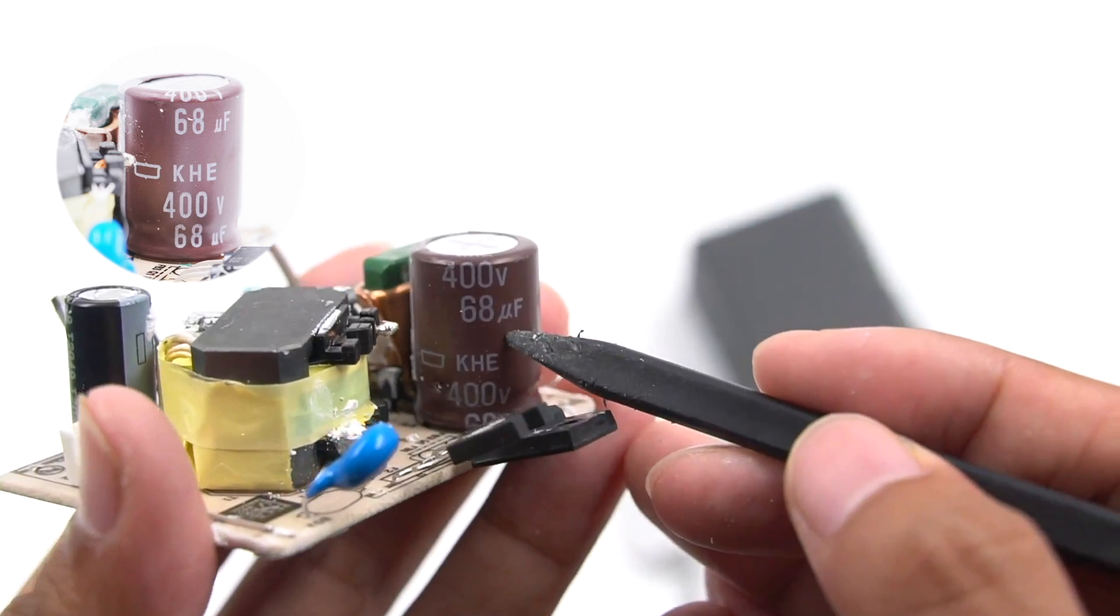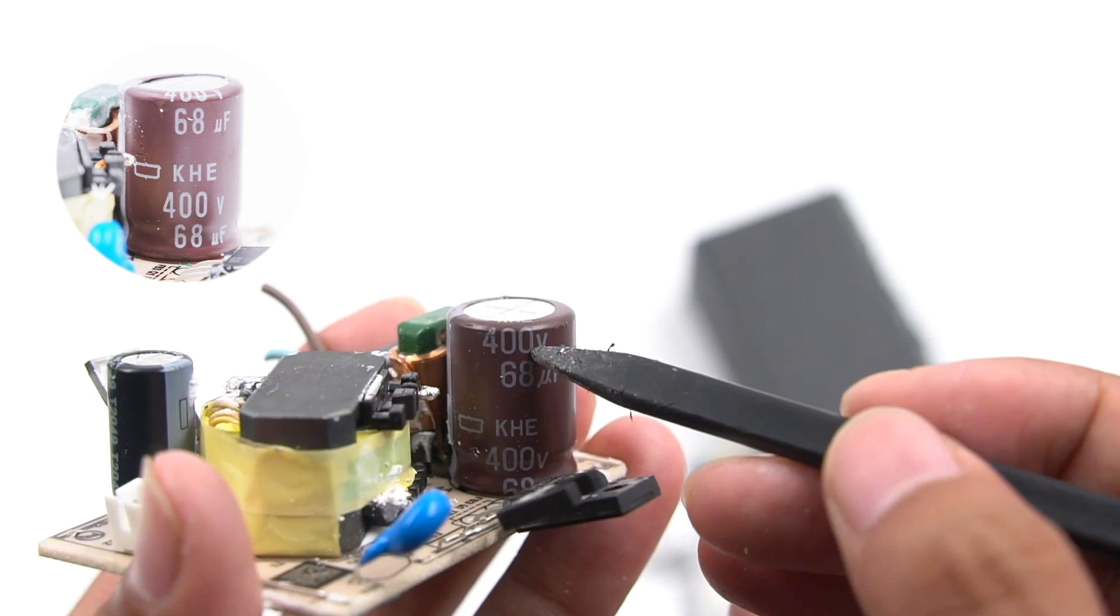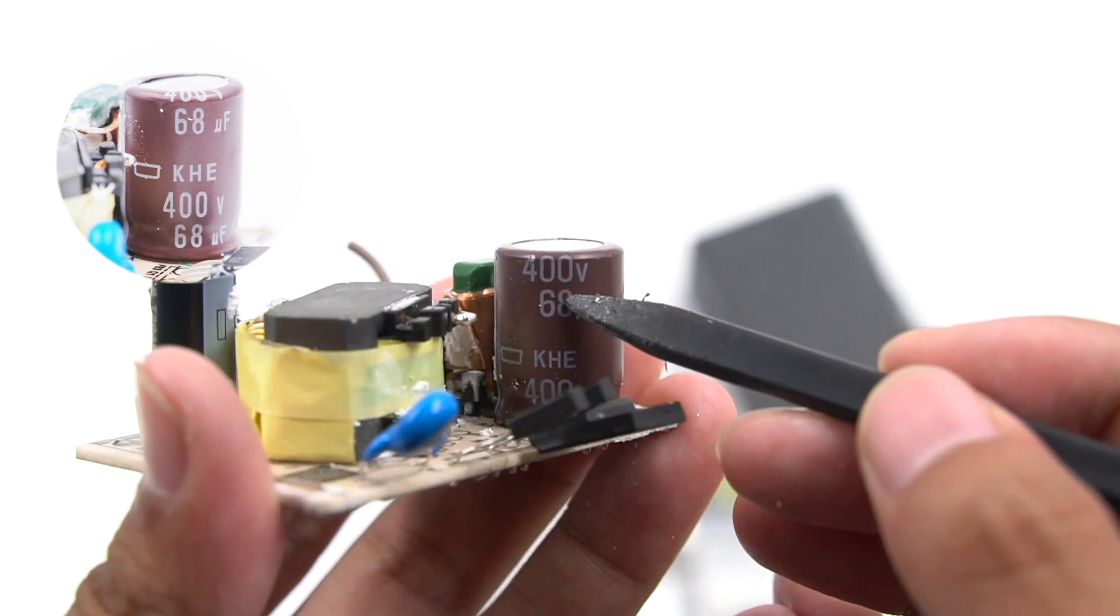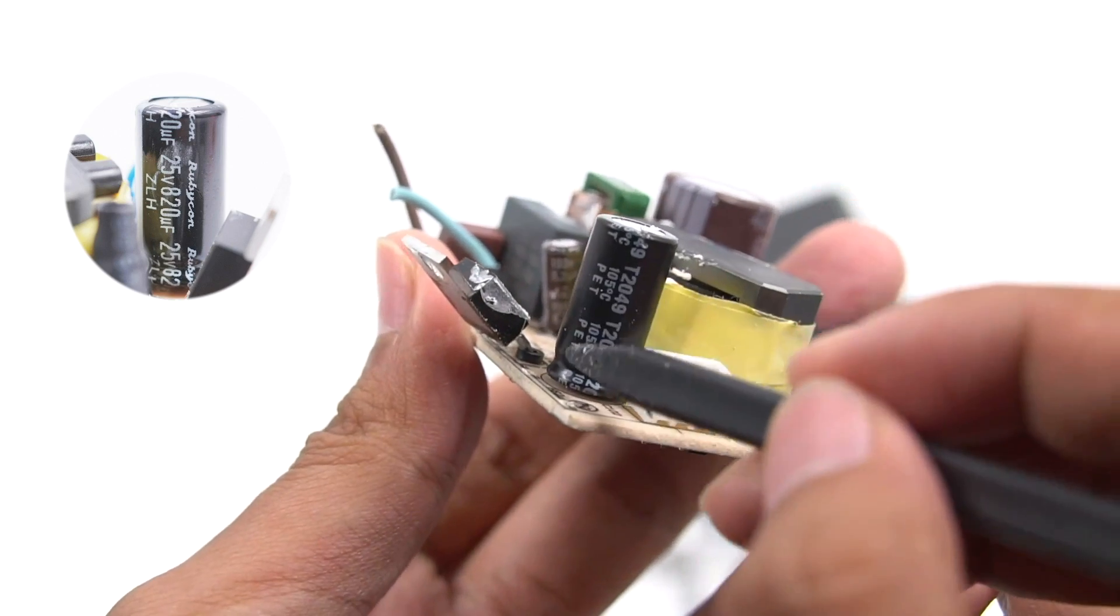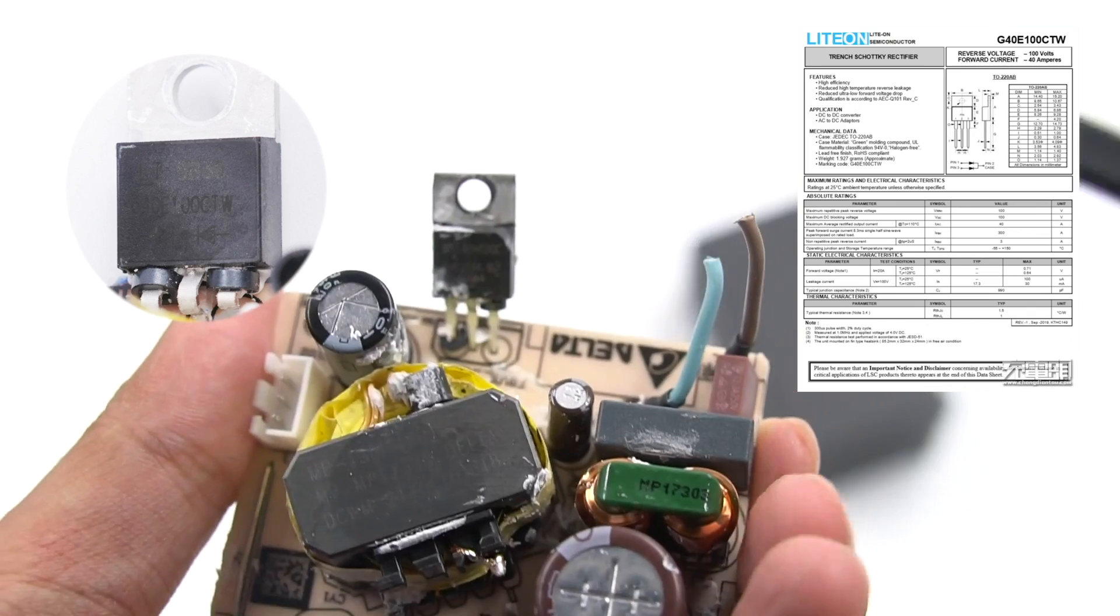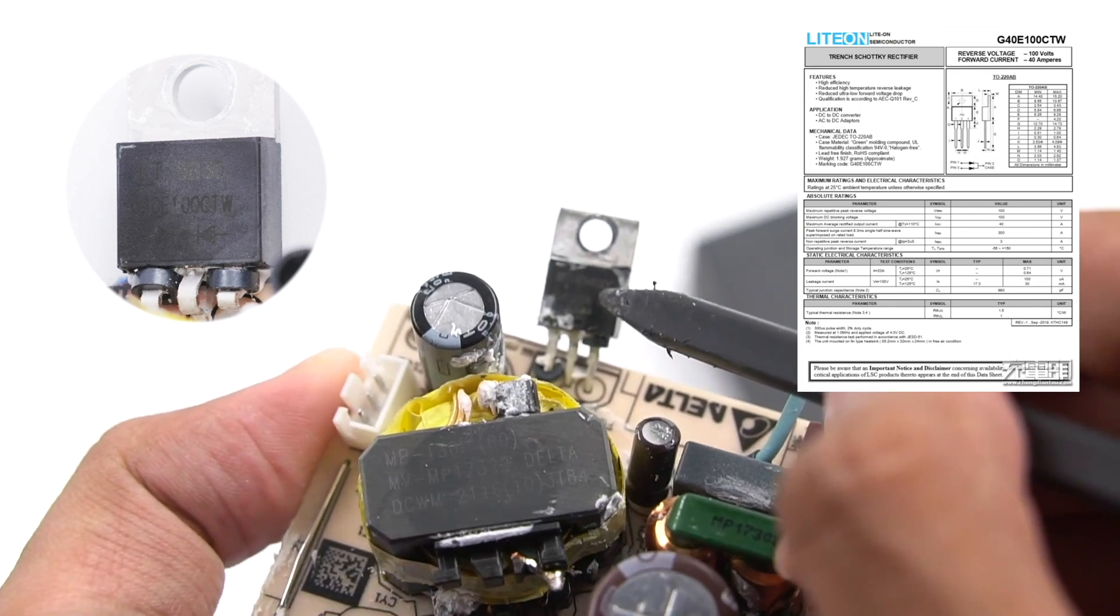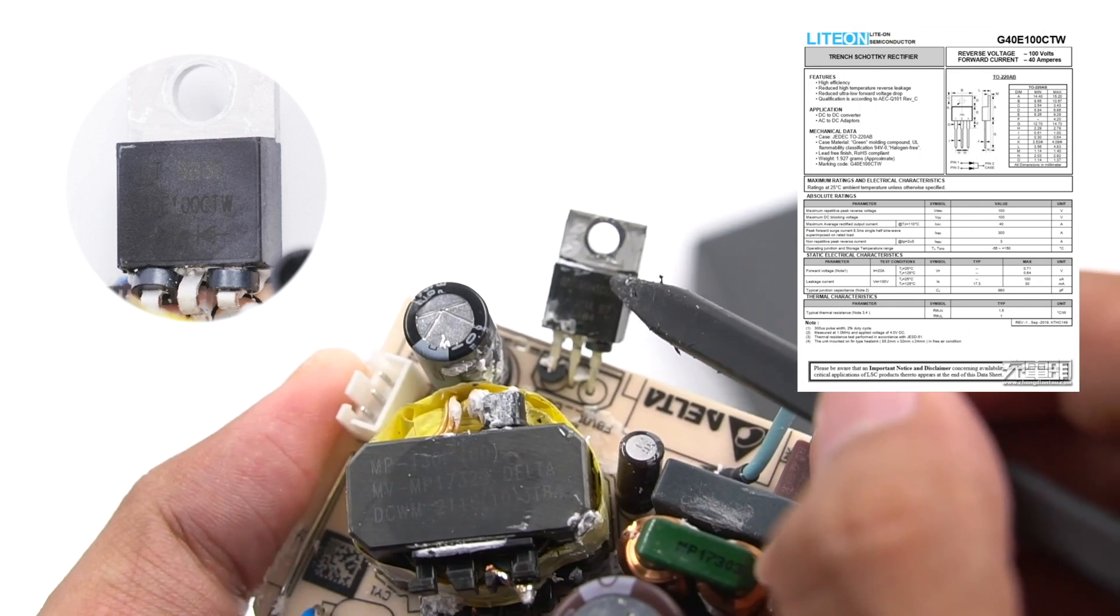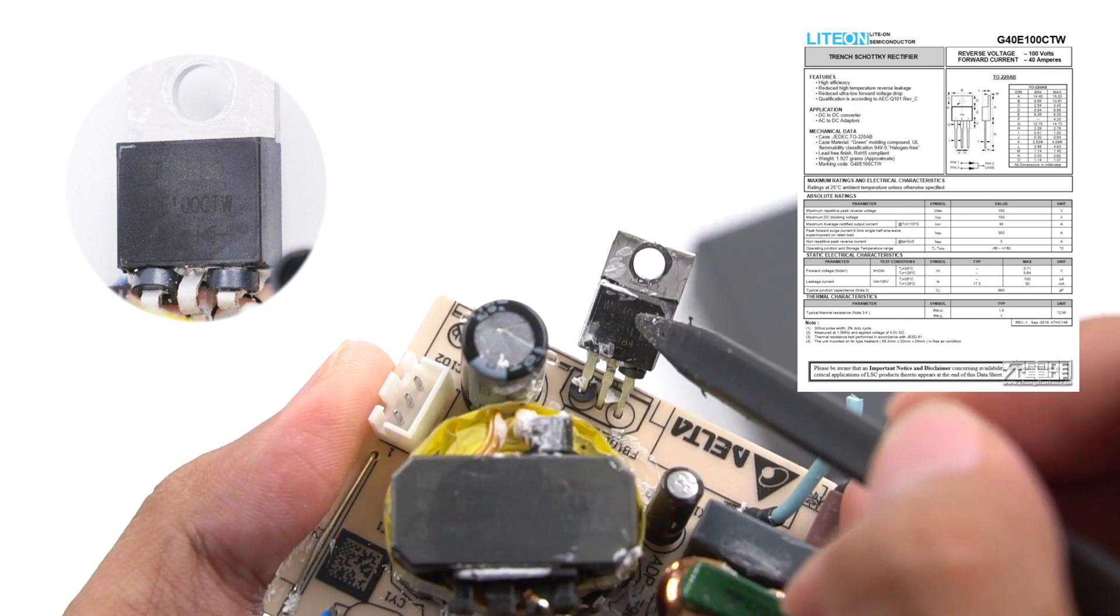The electrolytic capacitors of input filter comes from Nippon Chemi-Con KHE series. Specification is 400V, 68μF. The output filter capacitor is also from Rubycon. Specification is 25V, 820μF. The secondary rectifier tube is next to it. Here is the secondary rectifier of Lite-On, G40E100CTW. And the two pins are covered with magnetic rings.